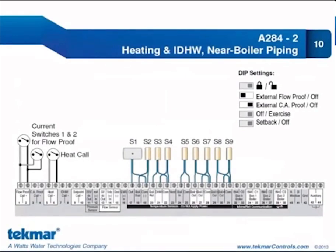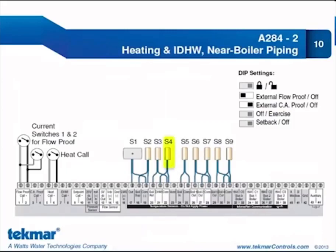For the flow proof call terminals, in this application we are using current switches to provide proof of flow. Those two current switches are connected in parallel to the flow proof call terminals, and since we are doing proof of flow, the DIP switch must be set to external flow proof. The heat call terminal is being switched, likely through a non-communicating thermostat such as one of our classic thermostats or the new 518 thermostat. We do not have an indirect domestic hot water call terminal connection because we are controlling the IDHW with a domestic hot water sensor. Sensors include outdoor, IDHW, boiler supply, boiler return, boiler inlet, and individual boiler outlet sensors.